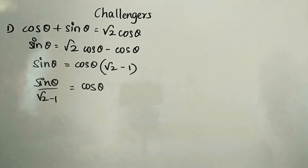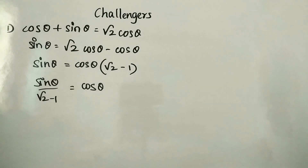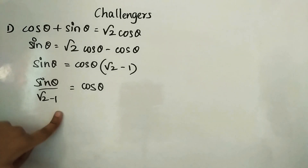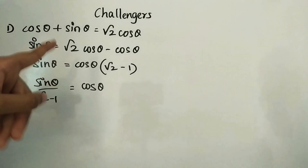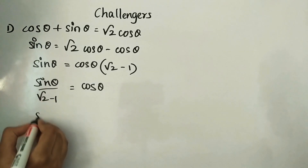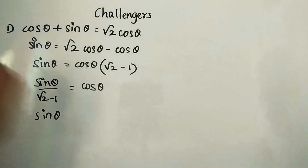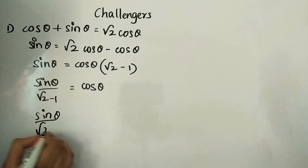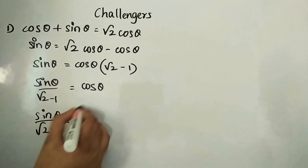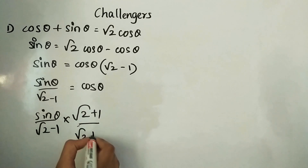Now the denominator is irrational, so we have to rationalize it. For rationalizing, we multiply both numerator and denominator by (√2 + 1). So we get sin θ(√2 + 1) divided by (√2 − 1)(√2 + 1).